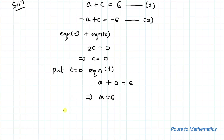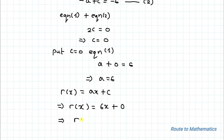We were asked to find the remainder. We had taken r(x) = ax + c, so r(x) = 6x + 0 = 6x. Thus the remainder when this given polynomial is divided by x² - 1 is 6x. I hope you have understood the solution. Thanks for watching — please subscribe to my channel and hit the like button for more such interesting videos!